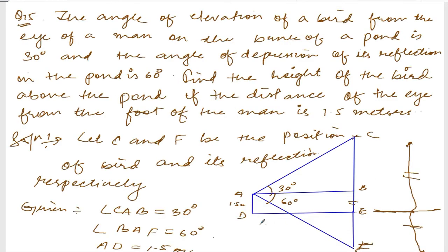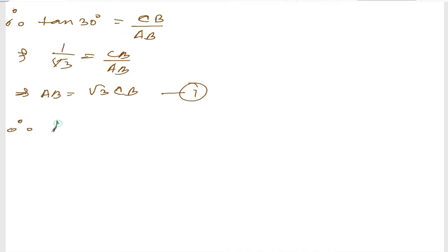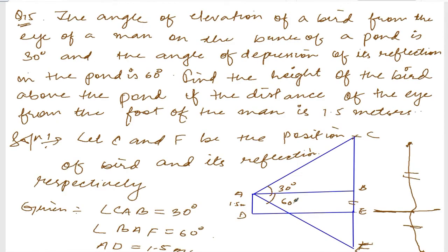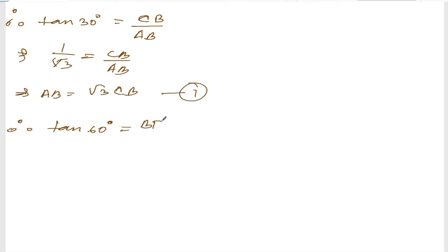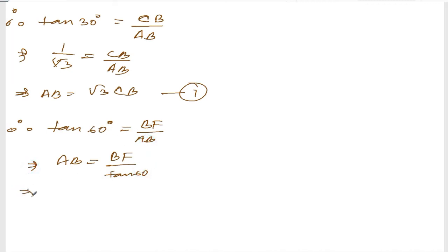Next, let us find tan(60°). Therefore, tan(60°) is equal to BF divided by AB. Tan(60°) is root 3, so root 3 equals BF over AB, which gives AB is equal to BF divided by root 3. This is equation number 2.